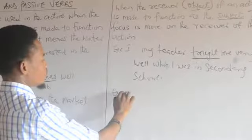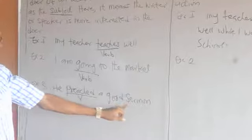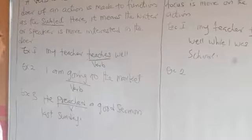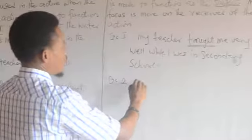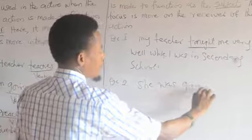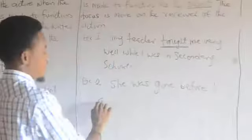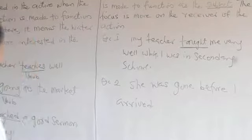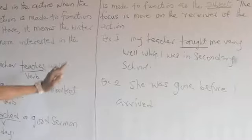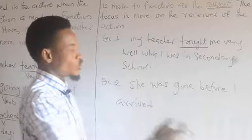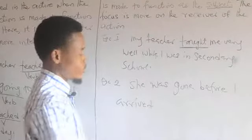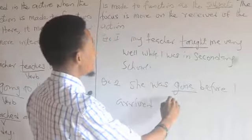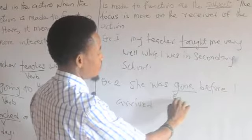Example two: 'He preached a good sermon last Sunday.' Or: 'She was gone before I arrived.' In the active, you were going to the market. Now in the passive, somebody comes to your house to ask after you, and your servant says, 'She was gone before you arrived,' or you would say, 'She was gone before I arrived.' The word 'gone' here is the passive verb.